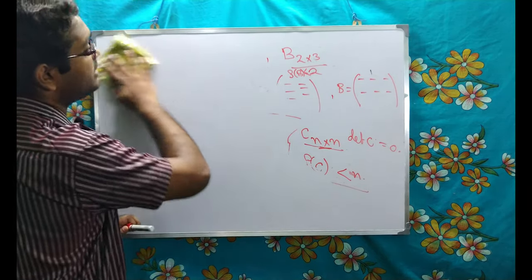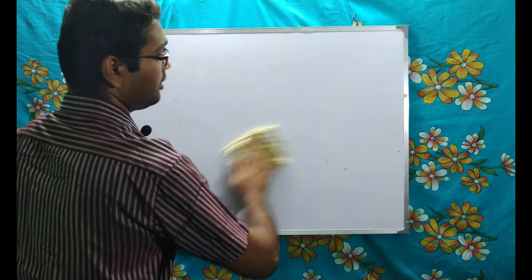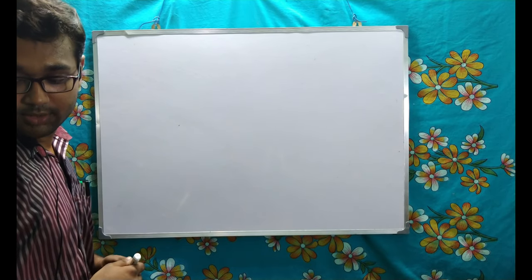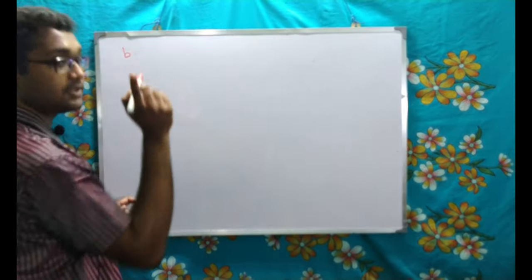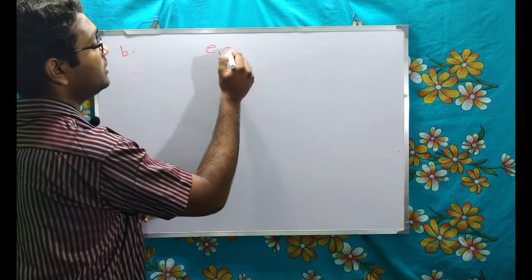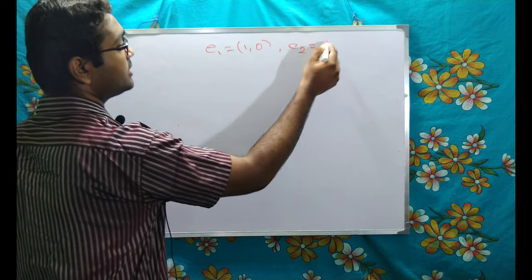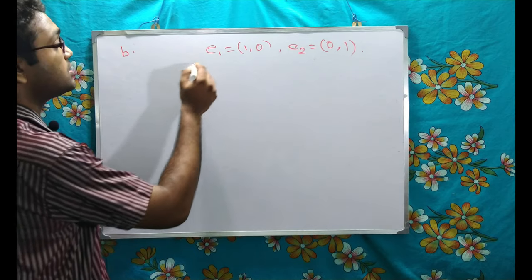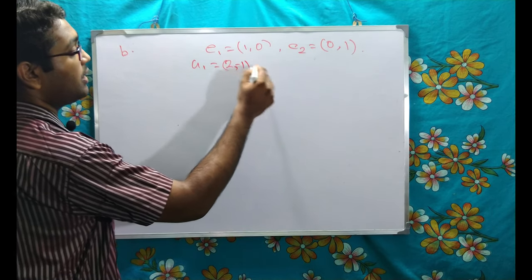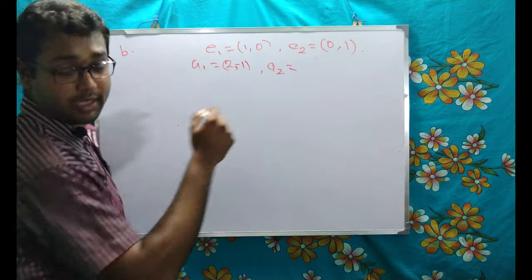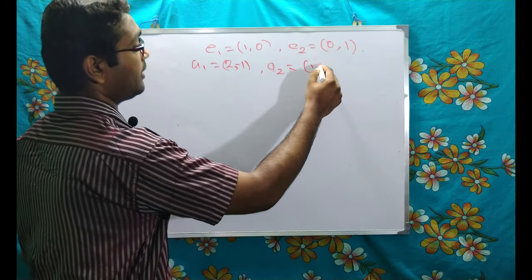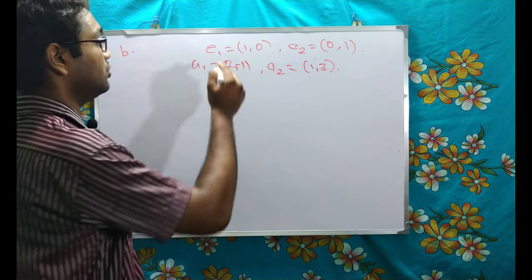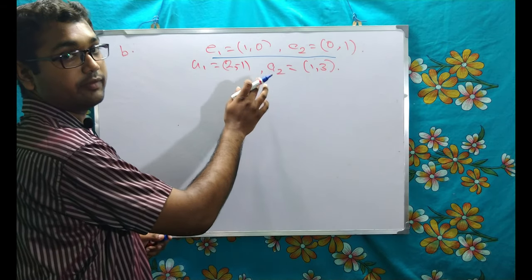Without any more delay, let's go to the next question. The next question says: there are two basis vectors — e₁ = (1, 0) and e₂ = (0, 1) — and we are also given two vectors a₁ = (2, -1) and a₂ = (1, 3). We have to express e₁ and e₂ as linear combinations of a₁ and a₂.